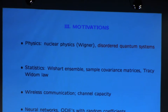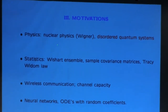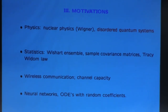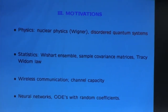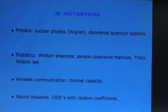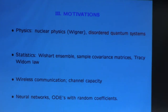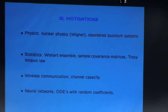But there are also many other motivations I won't talk about: statistics with Wishart matrices and sample covariance matrices — where the Tracy-Widom law is very important because in statistics you are interested in the largest eigenvalues — while in physics it's more like the bulk spectrum. There are also more recent applications: wireless communication, channel capacity, biology, models of neural networks, and ODEs with random coefficients, as discussed in Fyodorov's lectures.